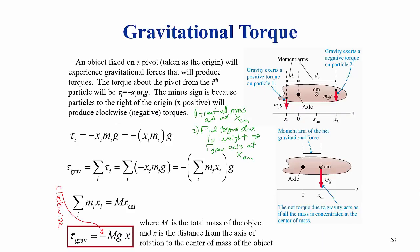A common example of torque that needs to be calculated is the torque caused by the force of gravity acting on an object, sometimes called the gravitational torque. The way that we calculate the gravitational torque is finding the center of mass of the object, treating all of the mass as being concentrated at the center of mass, letting the force of gravity act at that center of mass, and then calculating the torque due to the force of gravity acting at the center of mass.